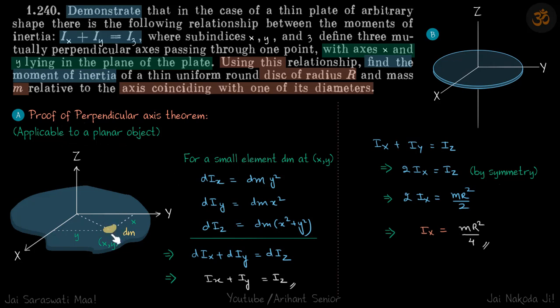Now let's take a small element dm on this object and calculate the three values Ix, Iy and Iz. Let's say the coordinates of this particle is (x,y). About the x-axis, the moment of inertia dI will be dm times y squared because this distance is y.